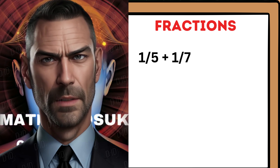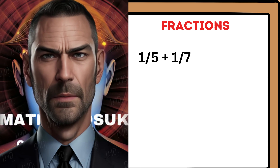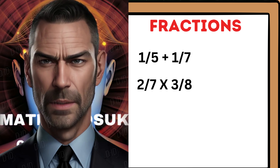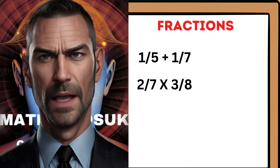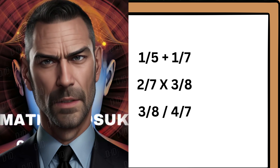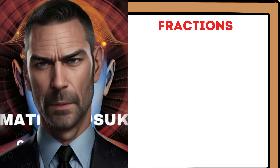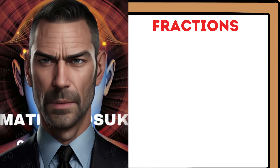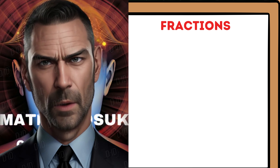Example: add one-quarter and one-third. To add them, we need a common denominator, which is 12. One-quarter becomes three-twelfths, and one-third becomes four-twelfths. Now we can add them: three-twelfths plus four-twelfths equals seven-twelfths.